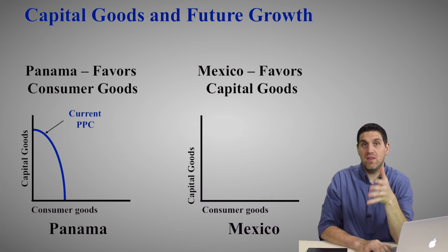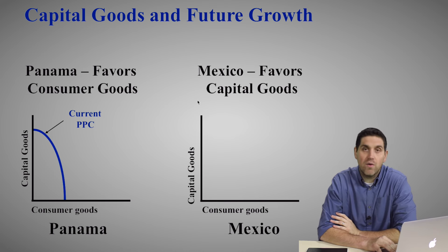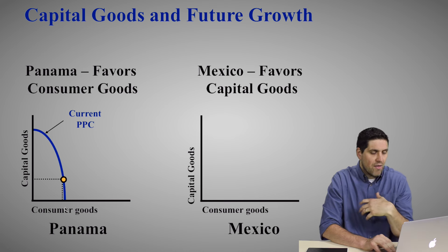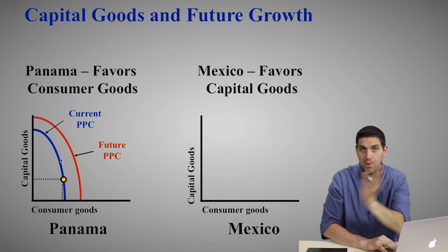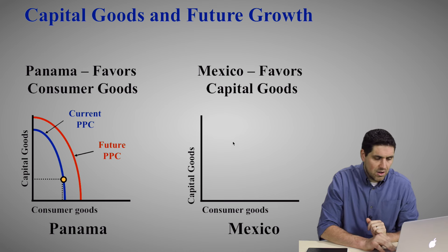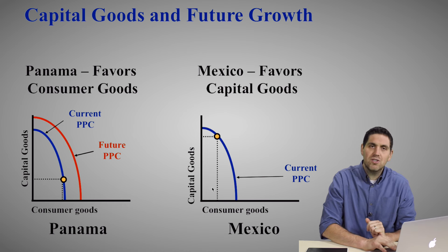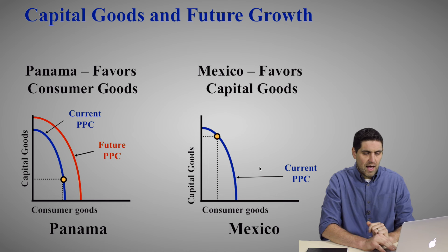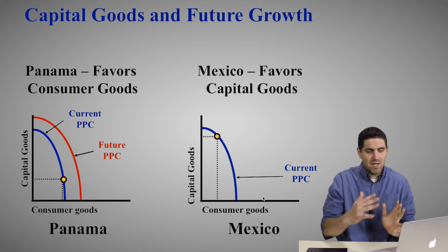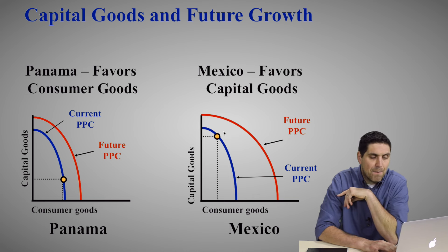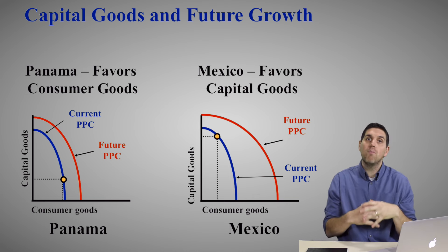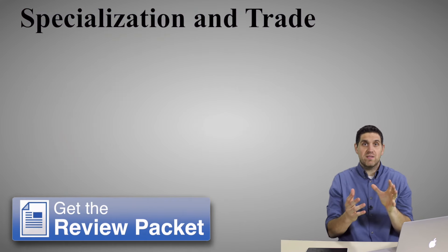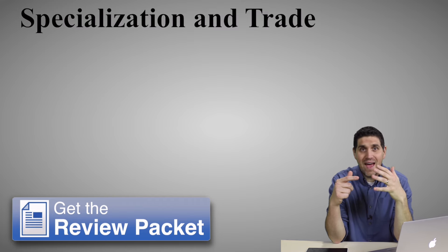One thing I do want to cover is the idea of growth in the future. Take a look at two different countries: Panama and Mexico. Panama can produce consumer goods and capital goods, and let's say they're producing a combination with a lot of consumer goods. Their future growth curve shifts out over time. But Mexico is producing a combination with less consumer goods and a whole lot more capital goods. Mexico's future curve is going to be way farther out. Why? Because capital is a resource — the more capital you produce, the more production you can do in the future, because capital is a shifter of the curve.